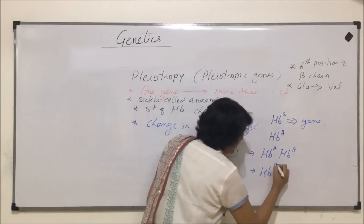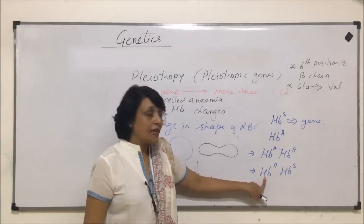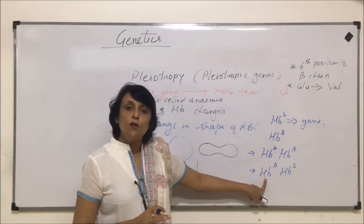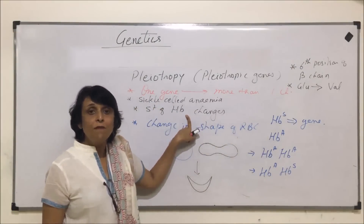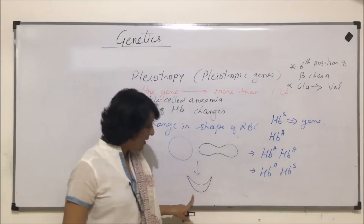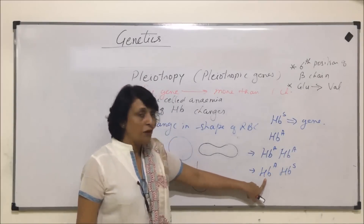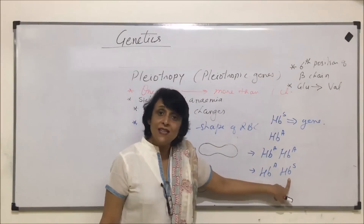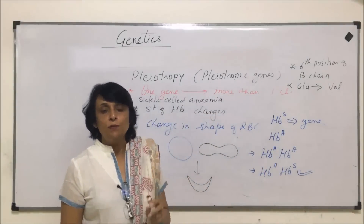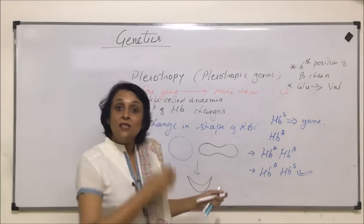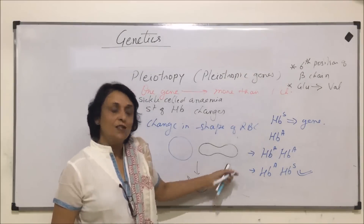The second situation is HBA/HBS — this is what we call the sickle cell condition. The HBA allele produces normal hemoglobin and normal RBC, whereas HBS produces the faulty hemoglobin with the change at the sixth position and sickle-shaped RBCs. That means 50% hemoglobin is normal and 50% is defective; 50% RBCs are normal and 50% are sickle cells. This individual will survive with some problems — whenever there are physical or muscular activities, oxygen supply becomes less, so they get tired very quickly.